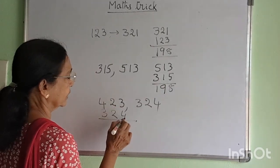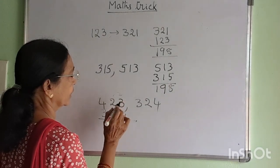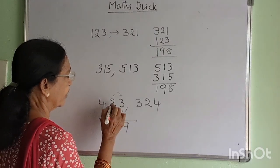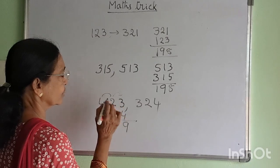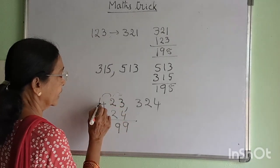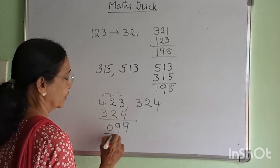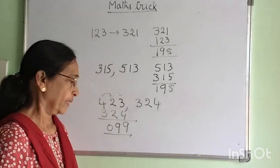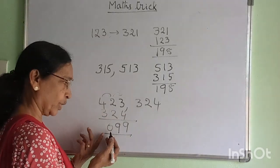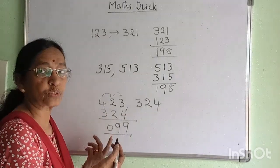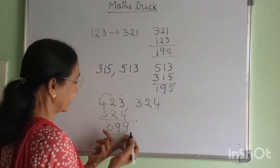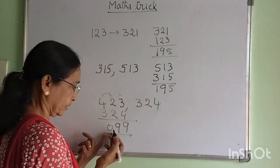3 minus 3 is 0. So, you cut three digits. And the value is 99. If you are in the 100s place, you will be 99.